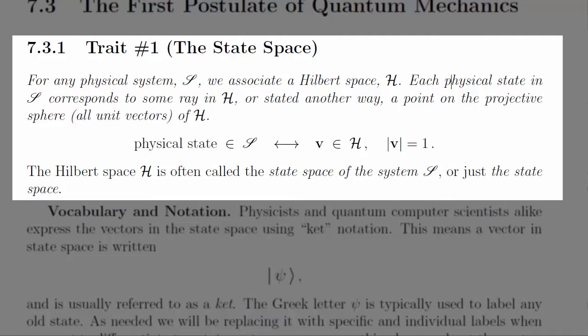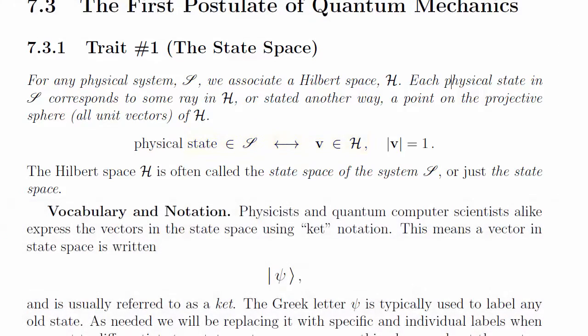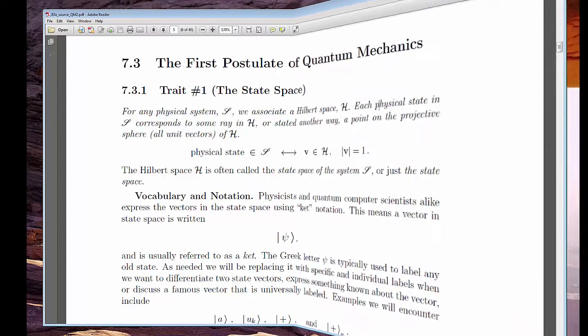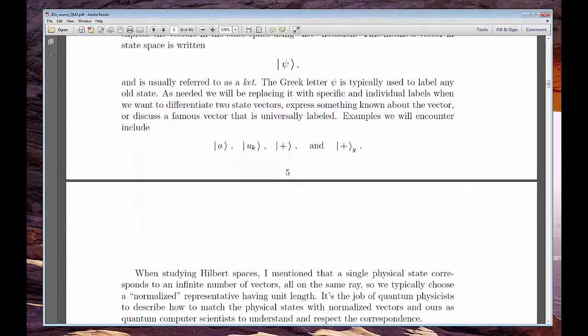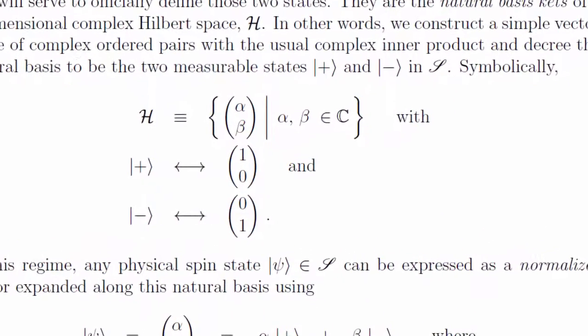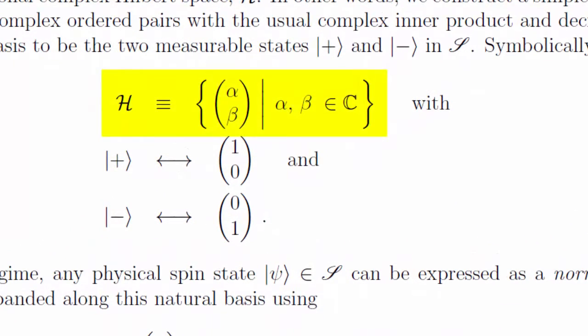The reason it's called a state space is that every state that the physical system is in corresponds to some vector in the state space. Notwithstanding a detail that we'll get into later, states are vectors and vectors are states. And please forgive me for continuing to repeat it, but the fundamental state space for quantum computing is C2, the ordered pairs of complex numbers. As we develop C2, we'll establish a preferred basis called the Z basis and meet some alternate bases.